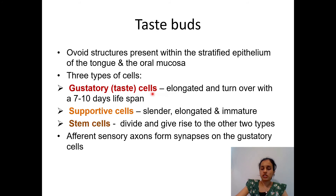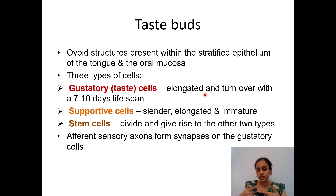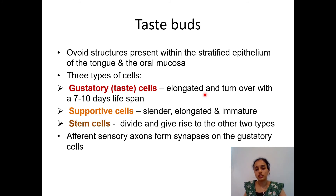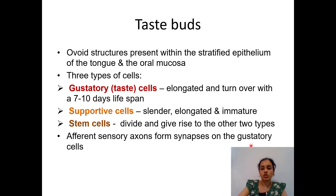Gustatory cells, also called taste cells, are elongated with a lifespan of 7 to 10 days. They turn over regularly, with basal stem cells dividing to give rise to both supporting cells and gustatory cells. Afferent sensory axons form synapses on the gustatory cells to carry taste sensation.